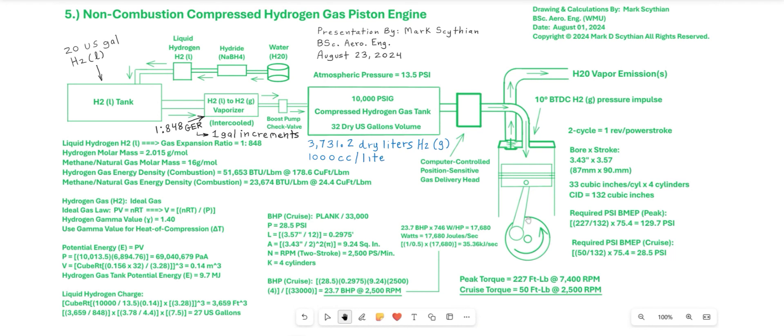So 3731.2 dry liters of hydrogen gas is taken from the one liquid gallon of liquid hydrogen. So we know there's 1,000 cc's to a liter. So that equates to 3.7312 million cubic centimeters of compressed hydrogen gas into the 32 dry U.S. gallon tank. After finding its cube root, we calculate 155.1 linear centimeters, for which we convert to linear meters, 1.551, followed by finding its cube. So we will have 3.73 cubic meters of compressed hydrogen gas into the tank for every one liquid hydrogen gallon that's vaporized.